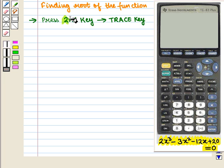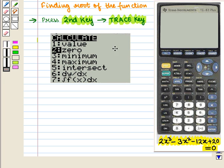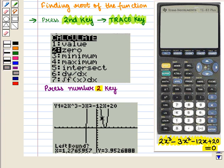For this we press SECOND key followed by TRACE key. We get this display. We want to find zeros, so we press number 2 key and we get this display of the graph.